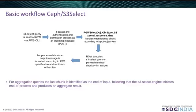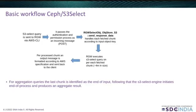This slide shows the basic workflow of Ceph S3 Select. The S3 Select query is sent to RGW via AWS CLI. It passes the authentication and permission process as an incoming message. The sendResponseData function is the entry point — it handles each fetched chunk according to the input object key. The sendResponseData first handles the input query and extracts the query and other CLI parameters. Per each new fetched chunk, RGW executes the S3 Select query on it. The current implementation supports CSV objects, and since chunks randomly cut CSV rows in the middle, those broken lines are skipped while processing the query.